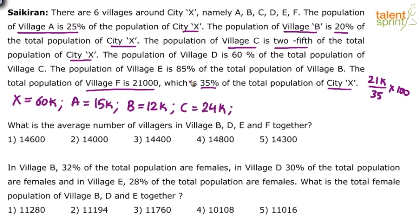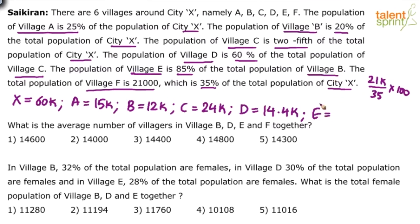Population of D is 60 percent of C — be careful, D is not 60 percent of X, it is 60 percent of C. So 60 percent of 24,000 gives us 12,000 plus 2,400, which is 14,400 — so D is 14.4k. Population of E is 85 percent of B, and B is 12,000, so 12,000 minus 1,200 minus 600 gives 10,200 — E is 10.2k. And F is directly given as 21,000.